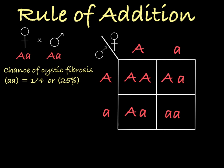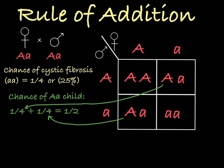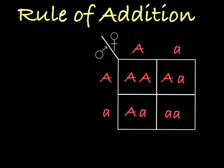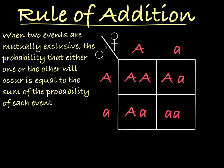What is useful in a Punnett square is that we can add the probabilities from each of these boxes — one-fourth and one-fourth — to say that the parents have a one-half or 50% chance of having a heterozygous genotype child. To make that calculation, we just used the rule of addition. When you have two mutually exclusive events, which means that they cannot happen together at the same time, the probability of either one or the other happening can be calculated by adding their individual probabilities together.